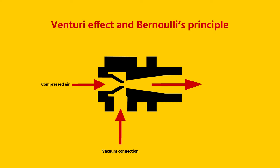Vacuum generators operate on the Venturi effect and Bernoulli's principle, which states that the higher the speed of the air, the lower the pressure. So by blowing compressed air at high speeds through a nozzle, you can create suction, and this is exactly what happens.